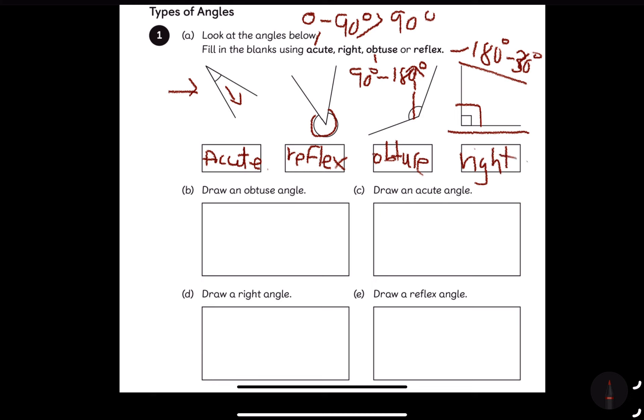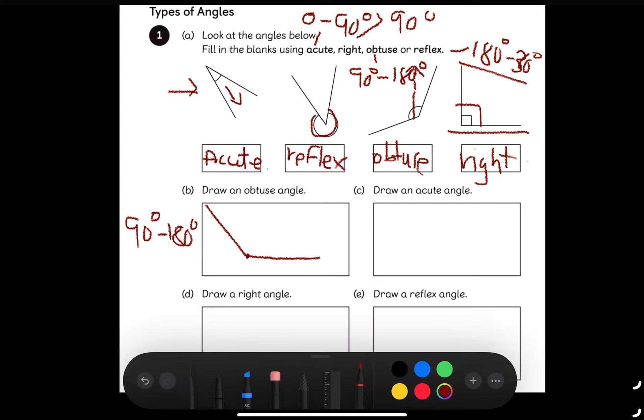Now the next question says draw an obtuse angle. We know obtuse angle has to be between 90 degrees to 180 degrees. Therefore, I will first draw my baseline. After placing the protractor or with the help of a line, I will take it a little bit away from my 90 degree imaginary line. This is how my imaginary line looks, which is a right angle, but I don't want right angle. So I will extend it a bit, and that is how it becomes an obtuse angle.